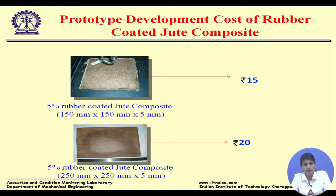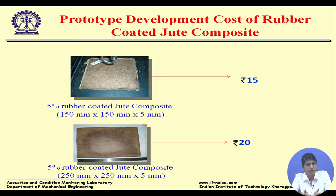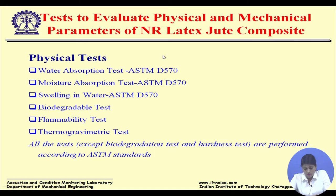Since we ultimately have to implement this composite in industry, we always look for cost. The prototype development cost for a 150 mm × 150 mm × 5 mm jute composite is only 15 rupees — a very cheap material and a viable alternative for noise reduction. A 5% rubber-coated jute composite of 250 mm × 250 mm costs around 20 rupees.